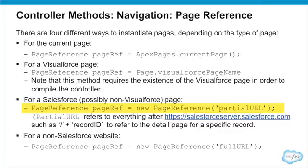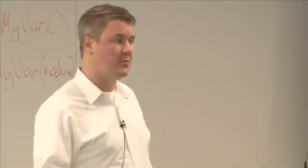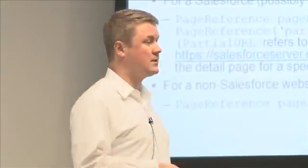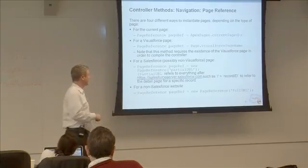The last option is the ability to forward the user to some other system — whether that's something like Google or an internal application on the intranet. We can build up a full URL, instantiate a page reference, and return that to redirect to that location.